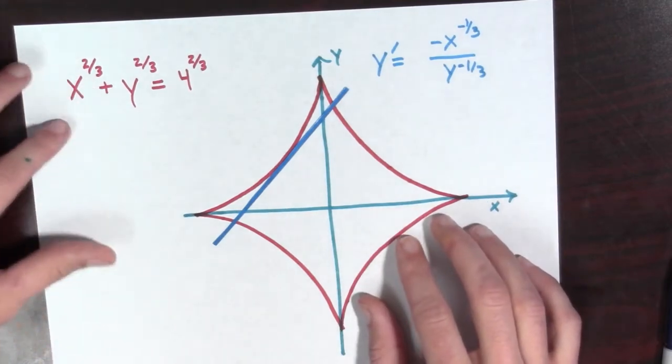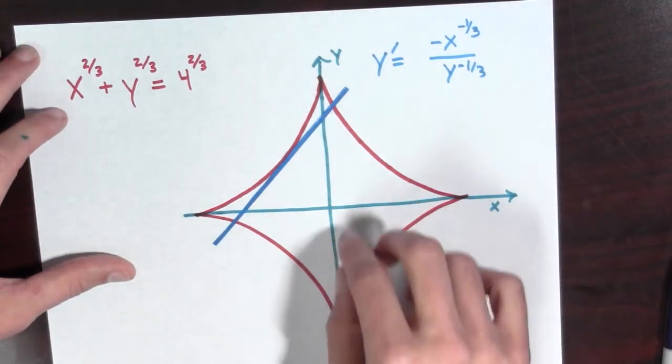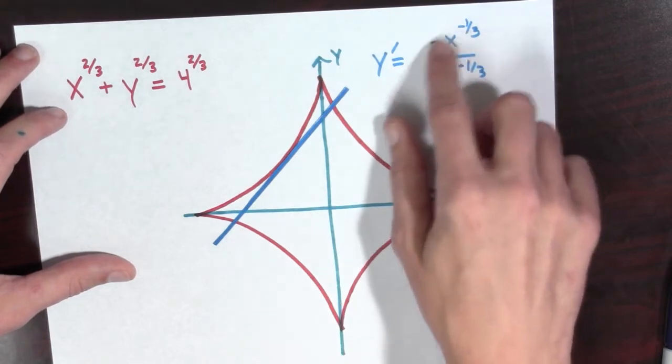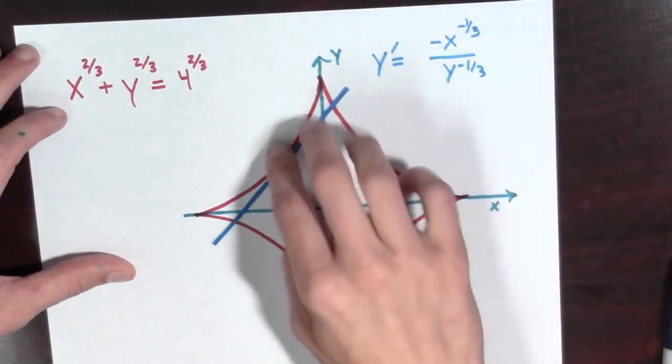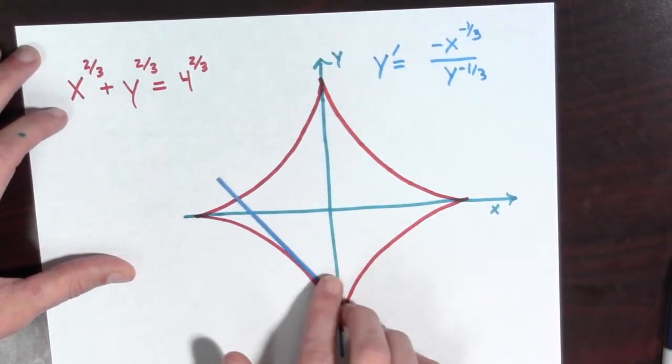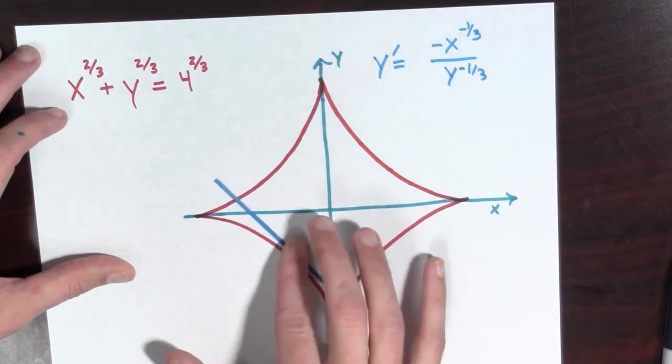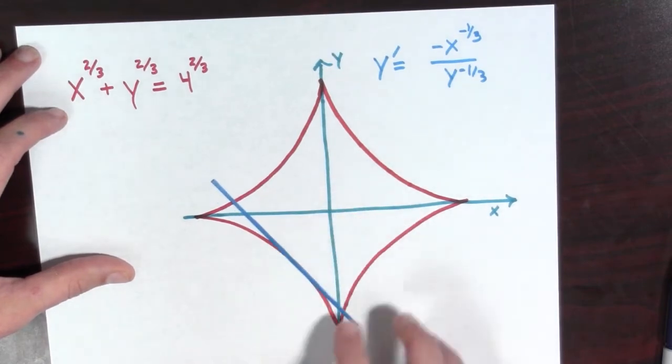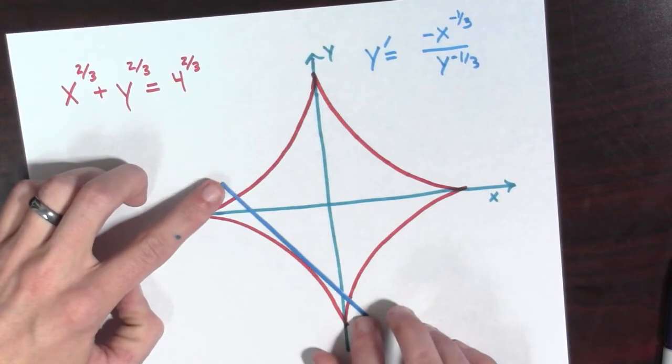If y is negative and x is negative, and they're equal in magnitude, this again is going to be -1. And look, we can see that on the curve right here if we put our tangent line in the right spot.